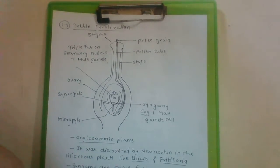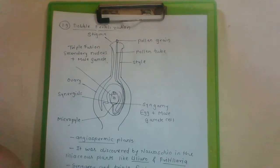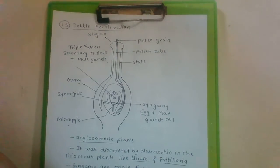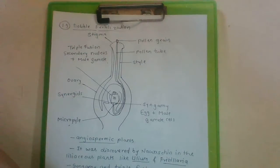The pollen tube carrying male gametes penetrates in one of the synergids. Watery contents of synergids are absorbed by pollen tube, which then ruptures and releases the content, including the two non-motile male gametes. Non-motile means immobile.